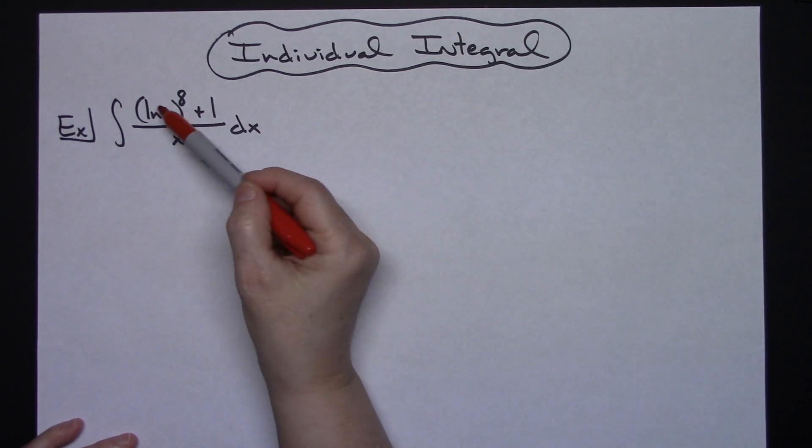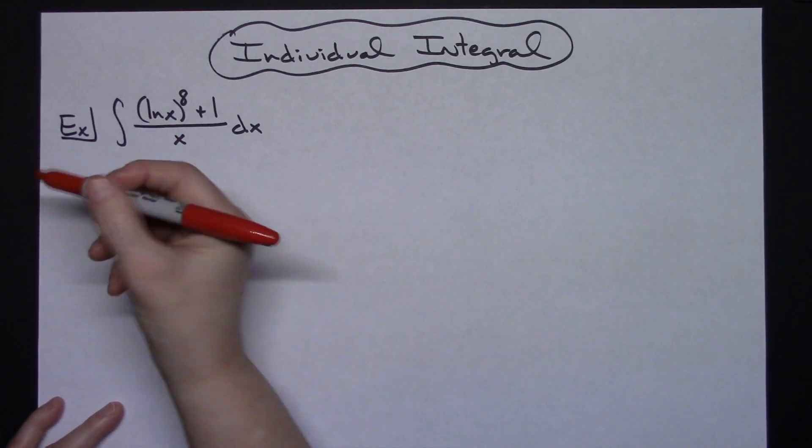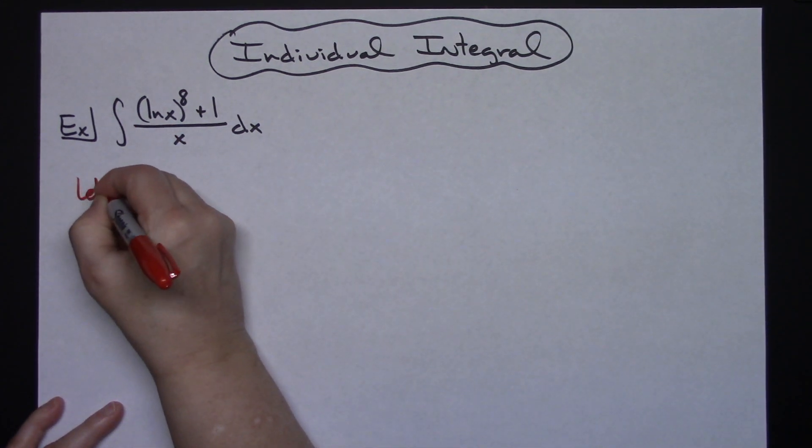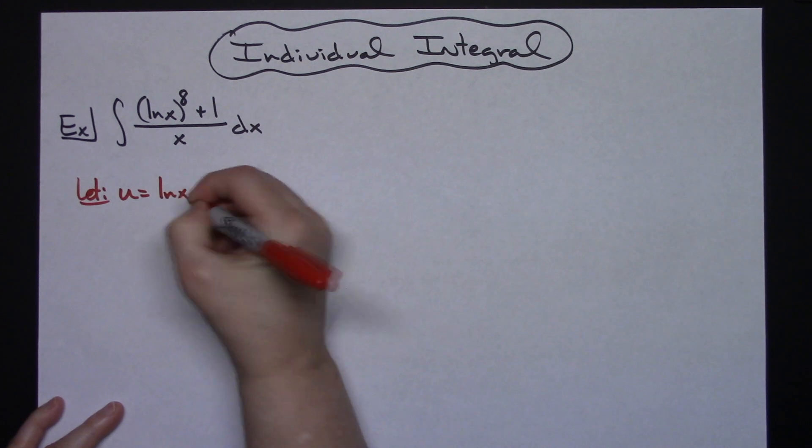I'm going to look at that inside part of that function right there and that's where I'm going to start. I'm going to let my u be that natural log of x.